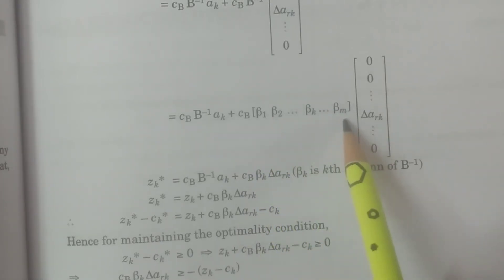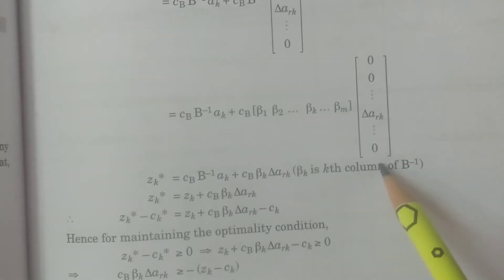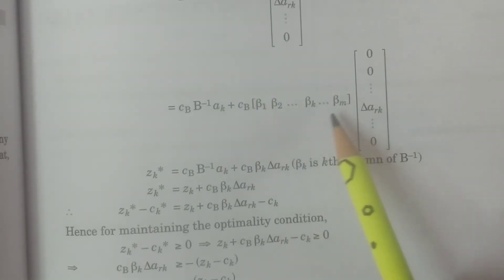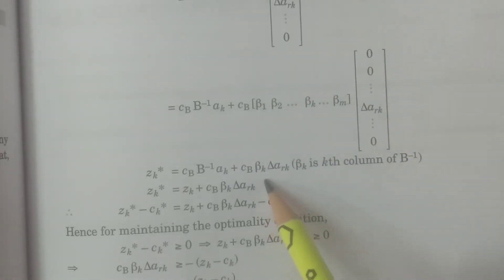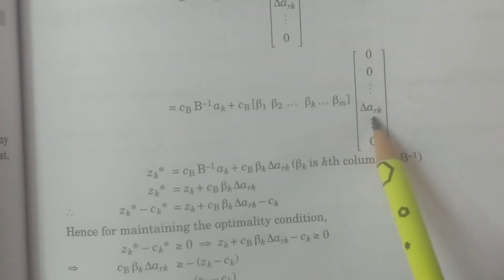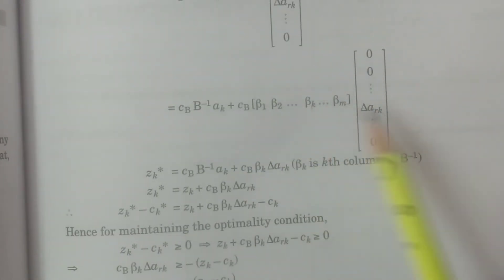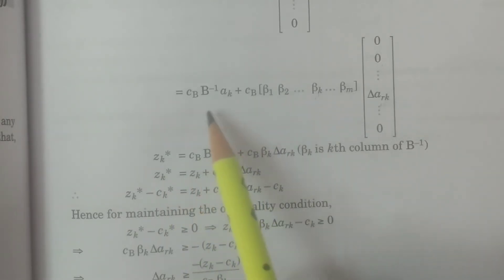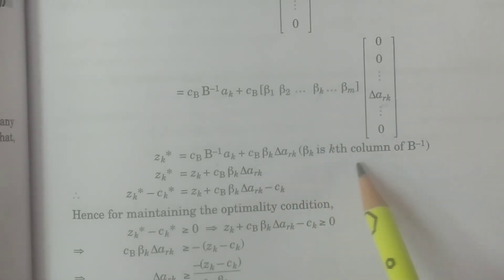Writing B-inverse as its m column vectors beta-1, beta-2, ..., beta-k, ..., beta-m, and multiplying by (0, 0, ..., delta-ark, ..., 0): only beta-k times delta-ark remains, since all other entries are zero. Multiplying row by row with the column vector, only the kth element is beta-k times delta-ark. Therefore zk-star equals cb times B-inverse times ak plus cb times beta-k times delta-ark, where beta-k is the kth column of B-inverse.